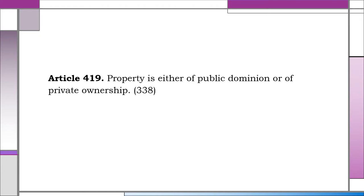Article 419. Property is either of public dominion or of private ownership. This article expressly provides that properties are owned either in a public capacity, or dominio publico, or in a private capacity, or propriedad privado. Regarding the state, it may own properties both in its public capacity — properties of public dominion — and in its private capacity, or patrimonial property.